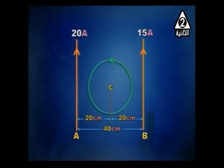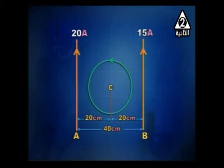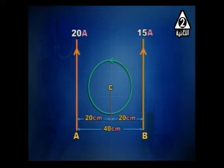Another problem: two straight wires, one carrying 20 amperes and the other carrying 15 amperes, with a circular loop. The distance between the two wires is 40 cm. The two wires carry currents in the same direction, which means their fields are in opposite directions in between the two wires.